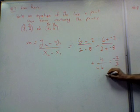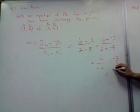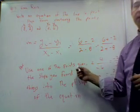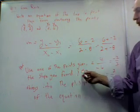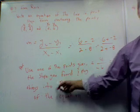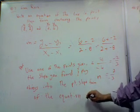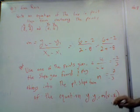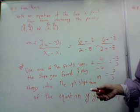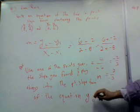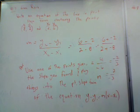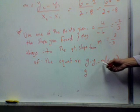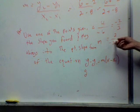Now some people want to put the negative on the bottom. It's fine. This is the same thing as 2 over negative 3. Either one of those is fine. Use one of the points given, the slope you just found, and plug things into the point-slope form of the equation. Y minus Y1 equals M times X minus X1.